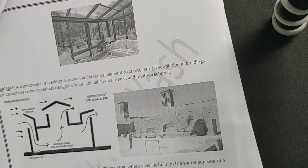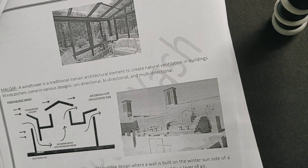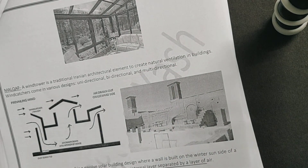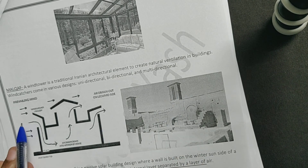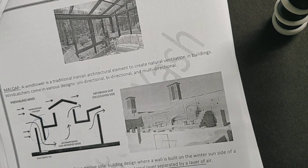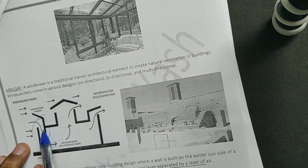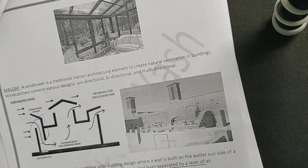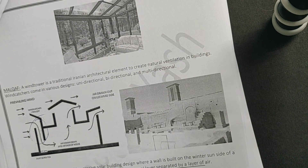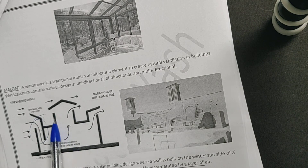The third option was malkaf. A malkaf is a wind tower — a traditional Iranian architectural element to create natural ventilation in buildings. Wind catchers come in various designs: unidirectional, bi-directional, and multidirectional. Hot air is caught from one side; inside, porous pots or water sprays cool the hot air — when water sprays on the hot air, it becomes cold, becomes heavy, and comes down into the building. People enjoy the cold air, and the warmed air rises due to decreased density and moves out of the system.